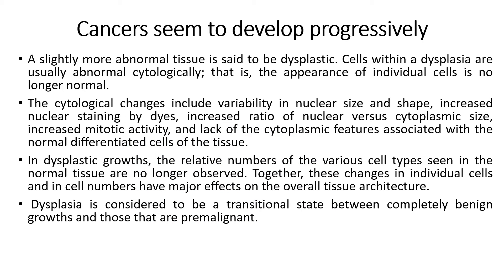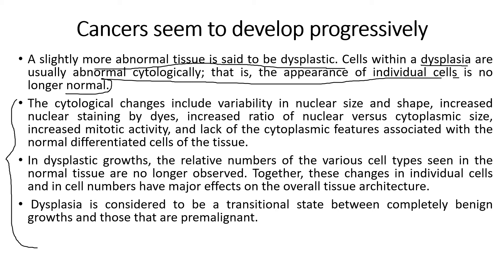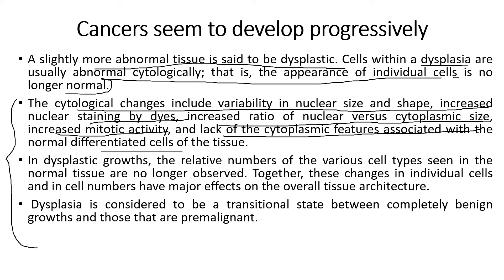The last form is dysplasia. It is a slightly more abnormal tissue — cells with dysplasia are usually abnormal cytologically, meaning the appearance of individual cells is no longer normal. This form is absolutely different from the other two and shows no signs of normal cells. Differentiating factors include variability in nuclear size and shape, increased nuclear staining by dyes, increased ratio of nuclear versus cytoplasmic size, increased mitotic activity, and lack of cytoplasmic features associated with normally differentiated cells.